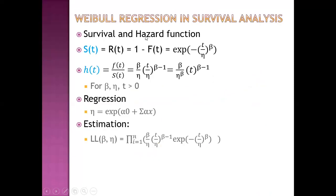In Weibull regression for survival analysis, the survival function and hazard function are given by specific formulas, and we estimate the eta values. Eta is inversely related to the hazard function. This is very important because the parameters obtained in Weibull regression are the inverse of parameters obtained in the Cox Proportional Hazard Model — this is the key difference between Weibull and Cox Proportional Hazard Model. Parameters are estimated by log-likelihood method or Newton-Raphson method.